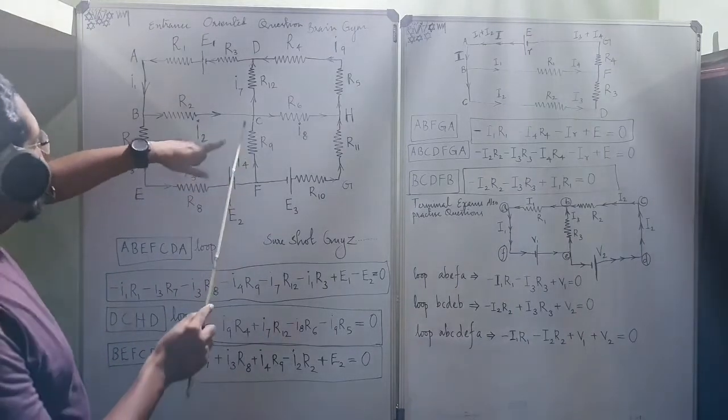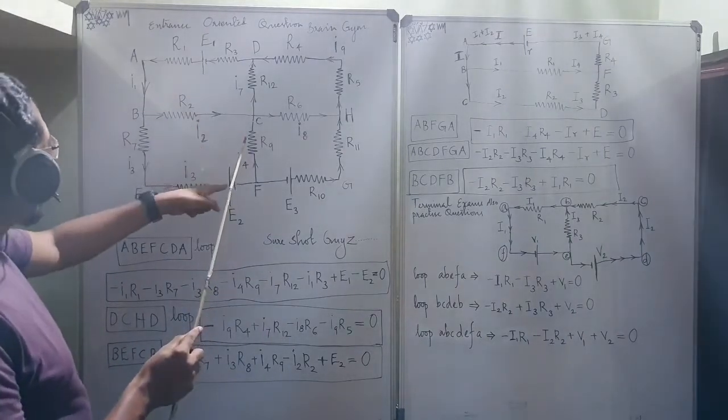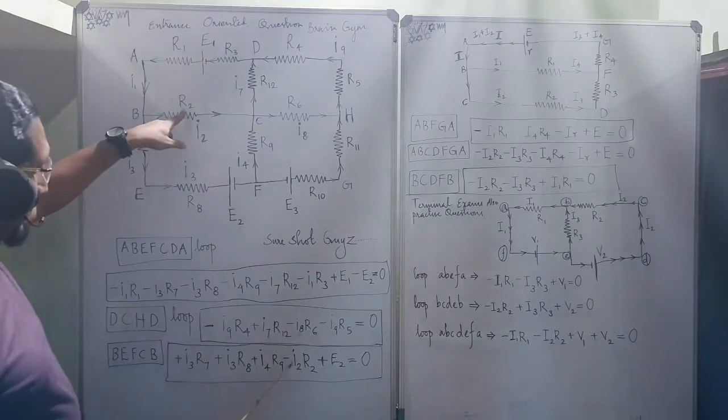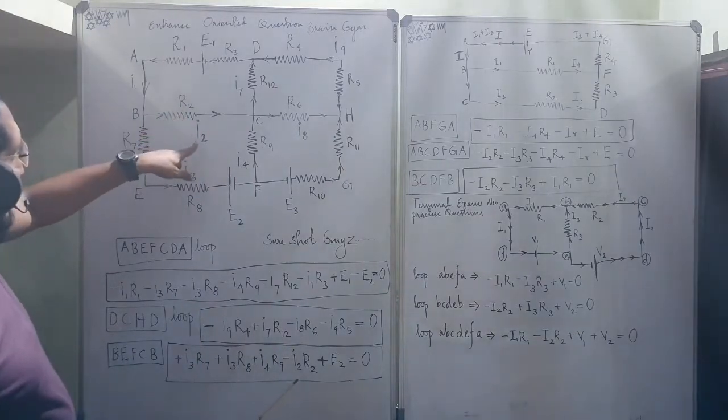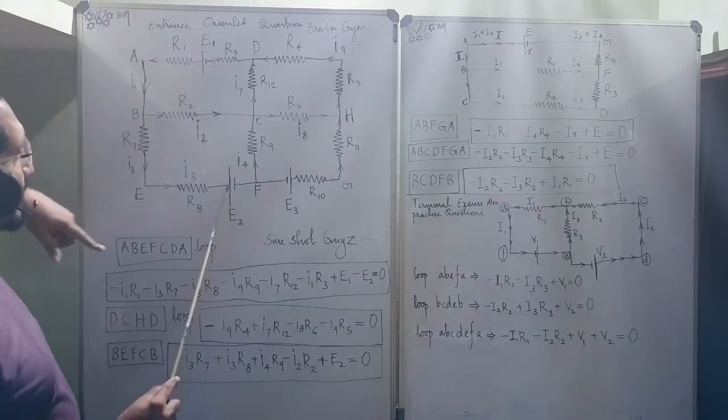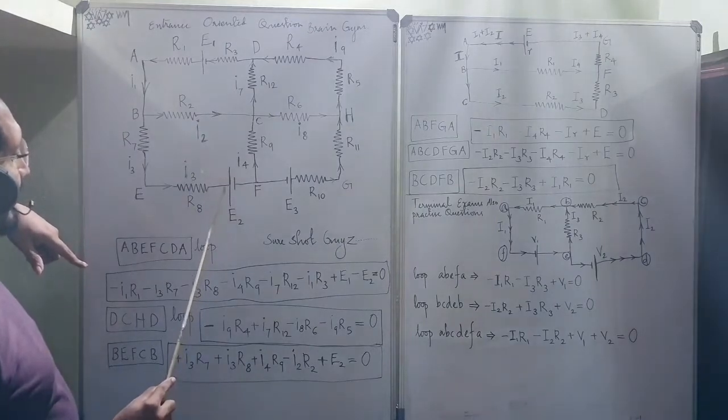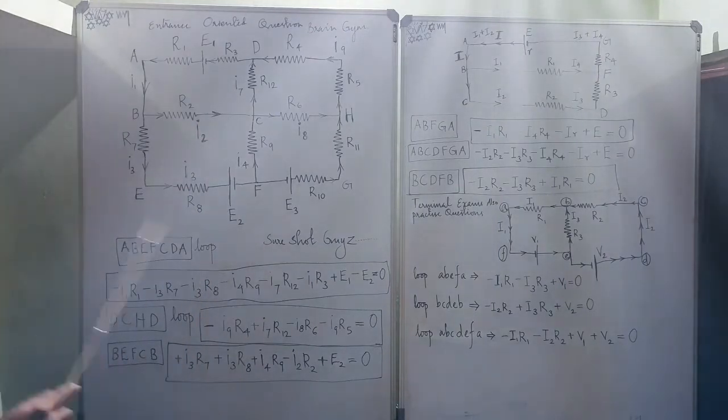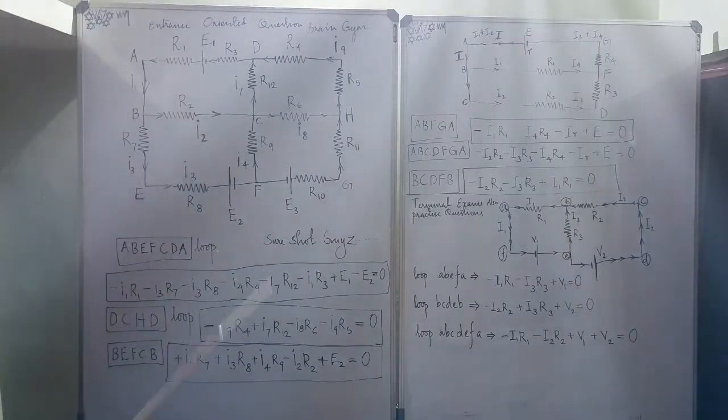Again along this direction, I4*R9. But against this it comes. That means from the positive like this it comes. So, minus I2*R2. Minus I2*R2. Plus this cell. Write this cell over here like that. It is done.